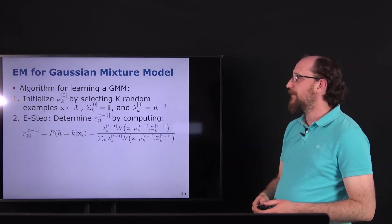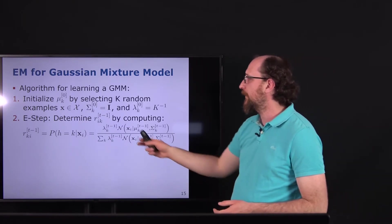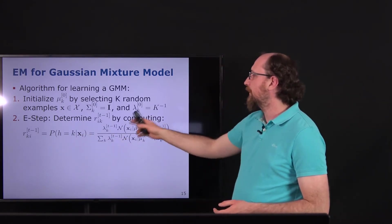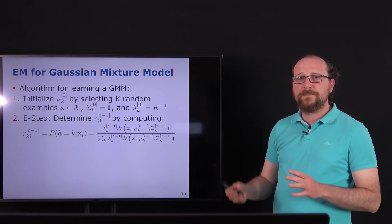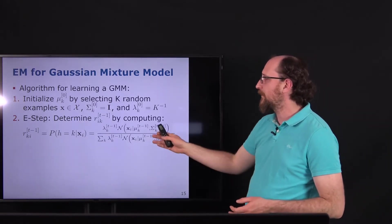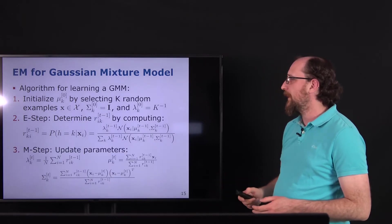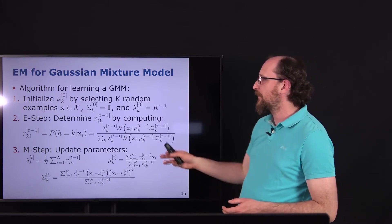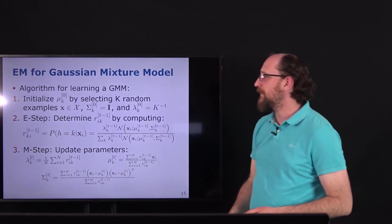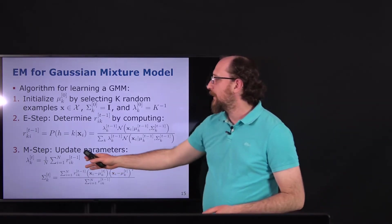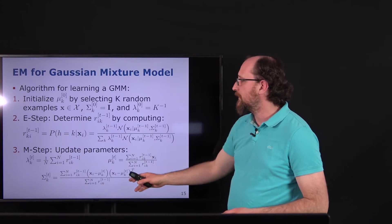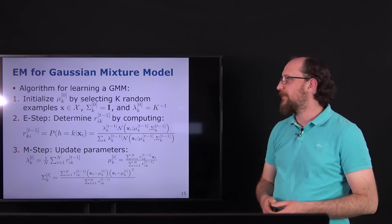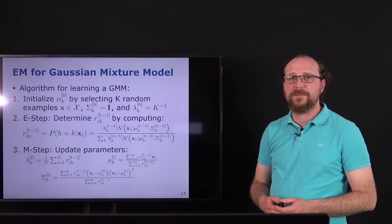In the E-step, we determine the responsibilities by calculating p(h|x). Plugging in all the derivations from before gives us these terms. Then in the M-step we use these responsibilities to update the mixture weights, means, and covariances. This is all that is needed to fit the maximum likelihood estimate for the Gaussian Mixture Model.